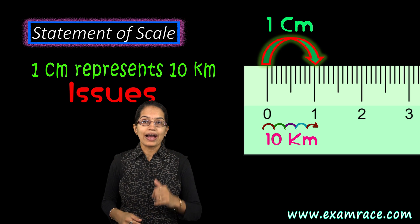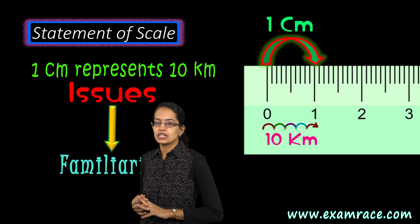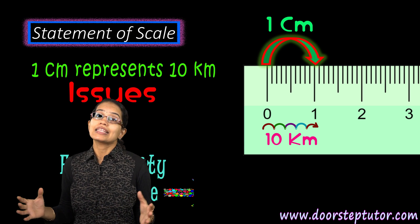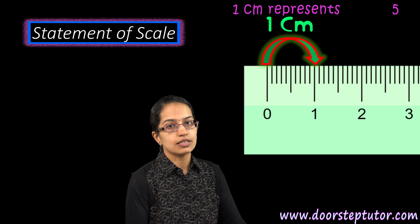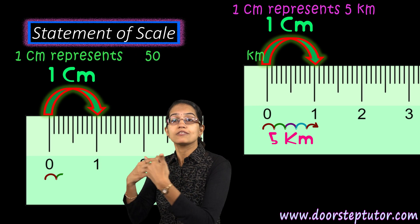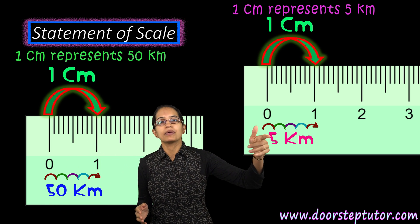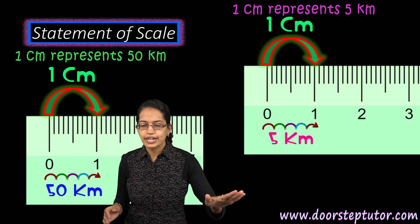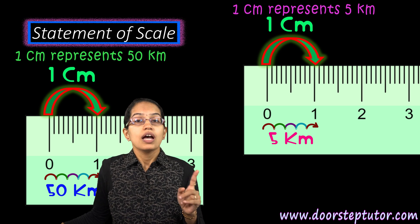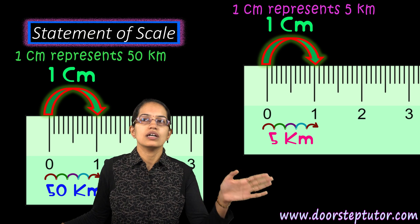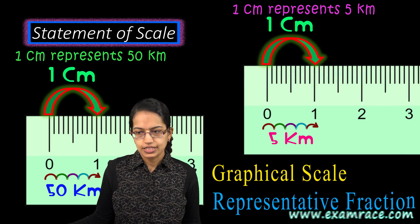The second drawback is that if this map is enlarged or reduced, I'll have to change my statement — to one centimeter represents 5 kilometers, or 50 kilometers. My previous statement becomes redundant and outdated, and a new scale has to be laid down. However, this is not the case with a graphical scale or a representative fraction.